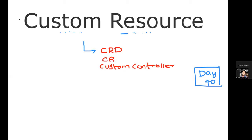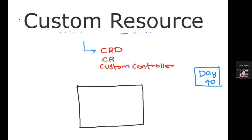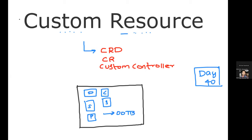This is your Kubernetes cluster. Within your Kubernetes cluster, by default there are some resources that come out of the box — for example, you have a Deployment, a Service, a Pod, ConfigMap, Secrets. These are all the native Kubernetes resources and they all come out of the box in Kubernetes.